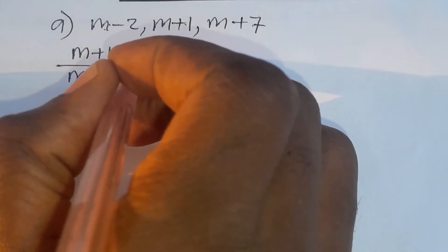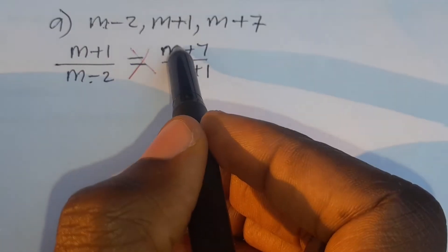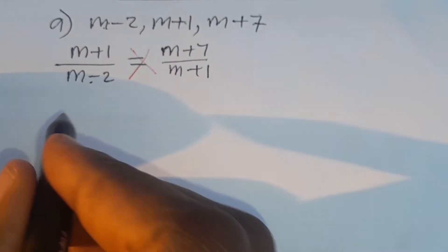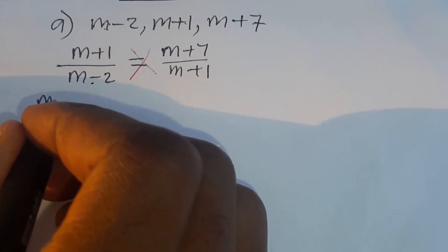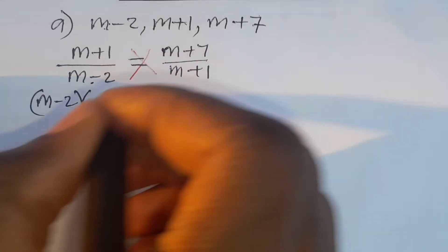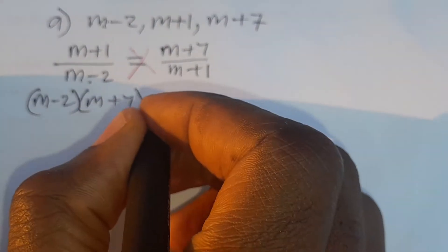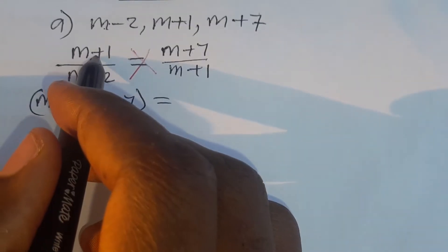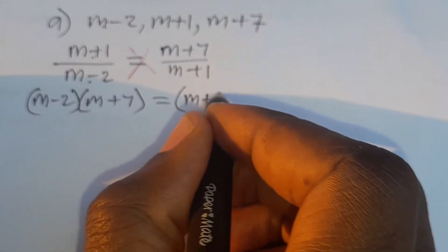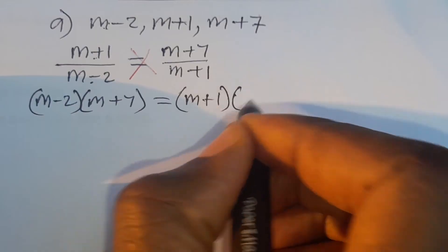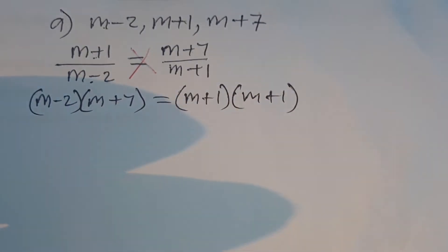At this stage we cross multiply. So we are going to have m minus 2 times m plus 7 is equal to m plus 1 times m plus 1.